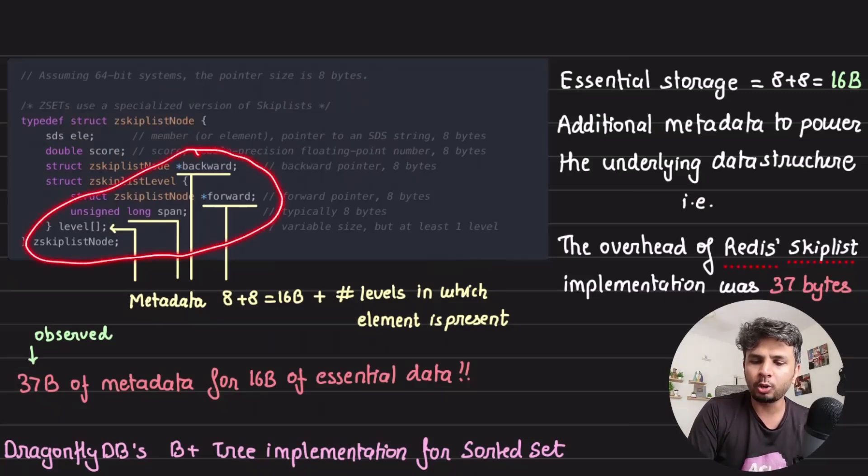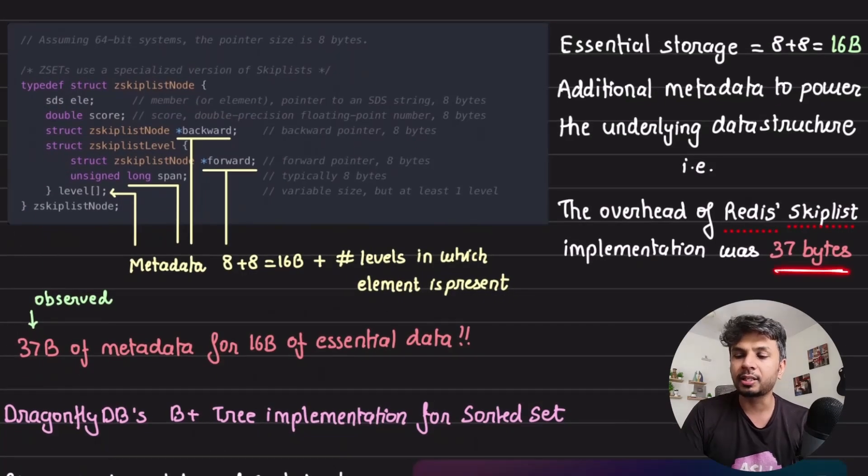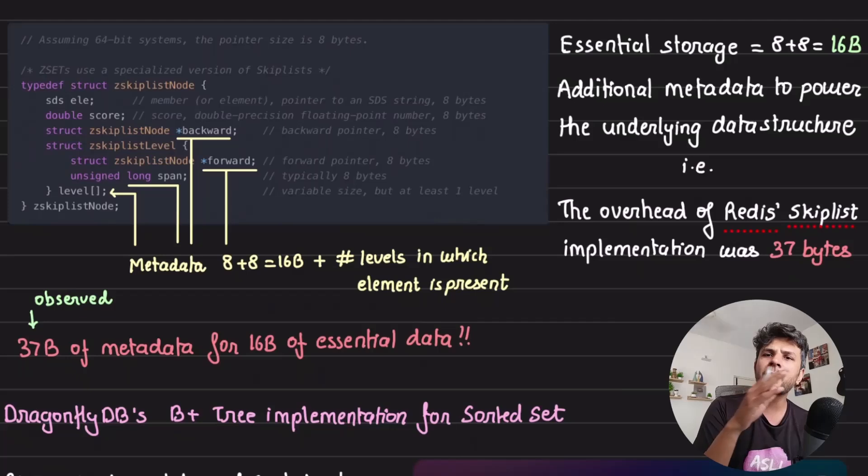Let's measure the overhead. It turns out to be roughly 37 bytes. For example, I need to store a backward pointer, a forward pointer, the span, and at which level it is present. There's a bit of overhead assigned to it. The forward data and span are both 8 bytes, so this becomes 16 bytes, and depending on each level, you'd have those many occurrences.